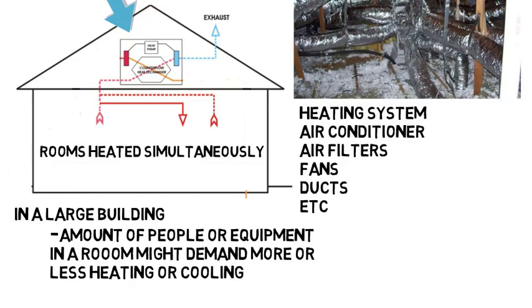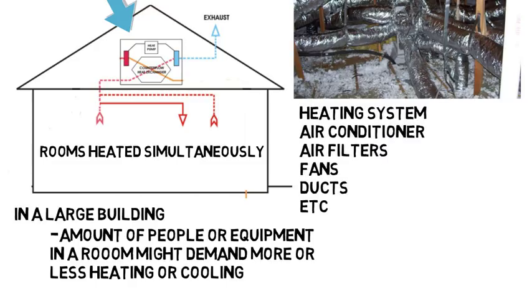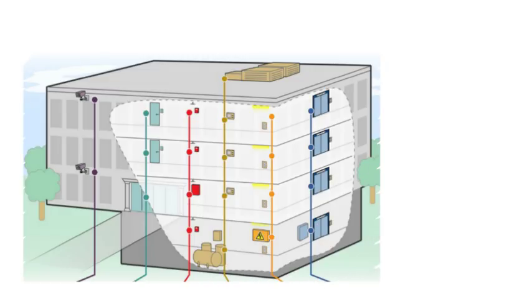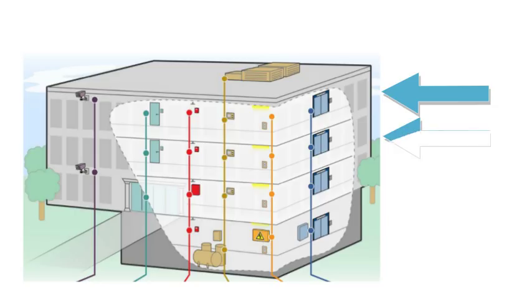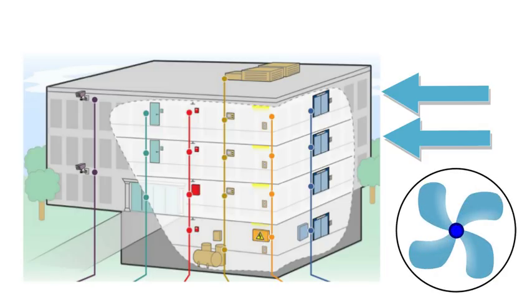When you include the heating system, the air conditioner, the air filters, fans, ducts, and more, that's known as the HVAC system, and the HVAC engineer has to account for all of this. In a large building, there might be a centralized system for everything, or maybe for a few floors. But if you want one room or floor heated or cooled differently than another with just one centralized heating system, the air will be heated or cooled appropriately, then some type of fan pushes that air through the ducts throughout the building to various rooms — but then everything will be heated or cooled at the same rate.